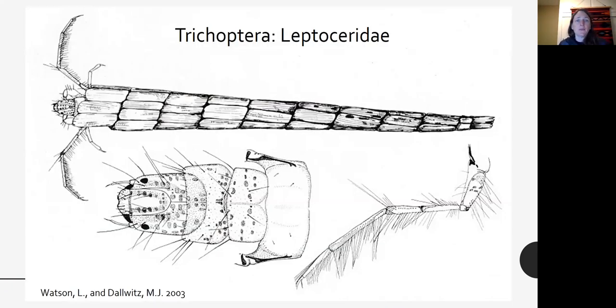There are a few caddisflies we think that move, well, we've seen them move through swimming. It seems like a very awkward method of movement for these guys. But you can see this leptoceridae in particular has a lot of hairs on the forelegs. And the forelegs stick out really far. And so it can actually swim through the water surface. And it has a streamlined body or a streamlined case shape that can help it move through the water.